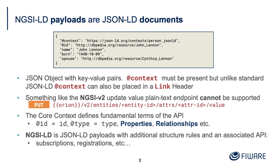As you know, all NGSI-LD payloads are JSON-LD documents. The snippet at the top is taken from the jsonld.org website explaining what JSON-LD actually is — nothing specifically FIWARE or NGSI related. The basis is that a JSON-LD document is a JSON object, and it's got this at-context thing, which gives you various bits of vocabulary like the at-ID.